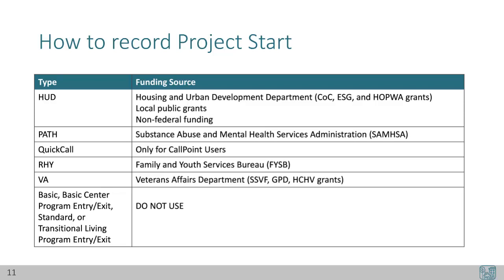PATH projects are funded by the Substance Abuse and Mental Health Services Administration, also called SAMHSA. Quick Call is only for call point users. RIE projects are funded by the Family and Youth Services Bureau, or FISB. VA should be selected for all projects funded by the Veterans Affairs Department, including supportive services for veterans and their families, grants per diem, and healthcare for homeless veterans grants. All other types should not be used — call and ask the data center if you have any questions. If the wrong type is selected, you won't see the right set of questions and your reports won't show your data. Let's make sure your hard work gets counted.